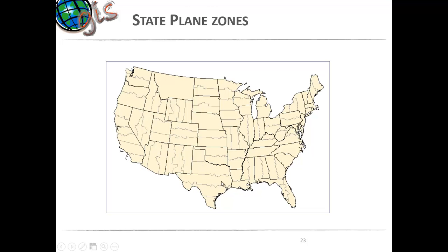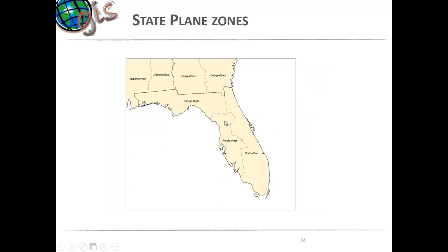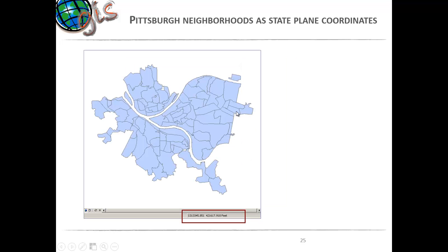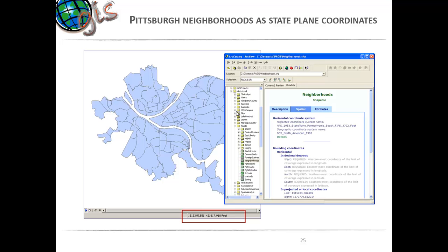These zones keep getting revised. Florida, for example, has North, West, and East zones. Depending on where your project is located, you want to find that state plane zone and use that projection for all your maps. One benefit of the state plane coordinate system is that map units are in feet rather than degrees, which is an advantage.